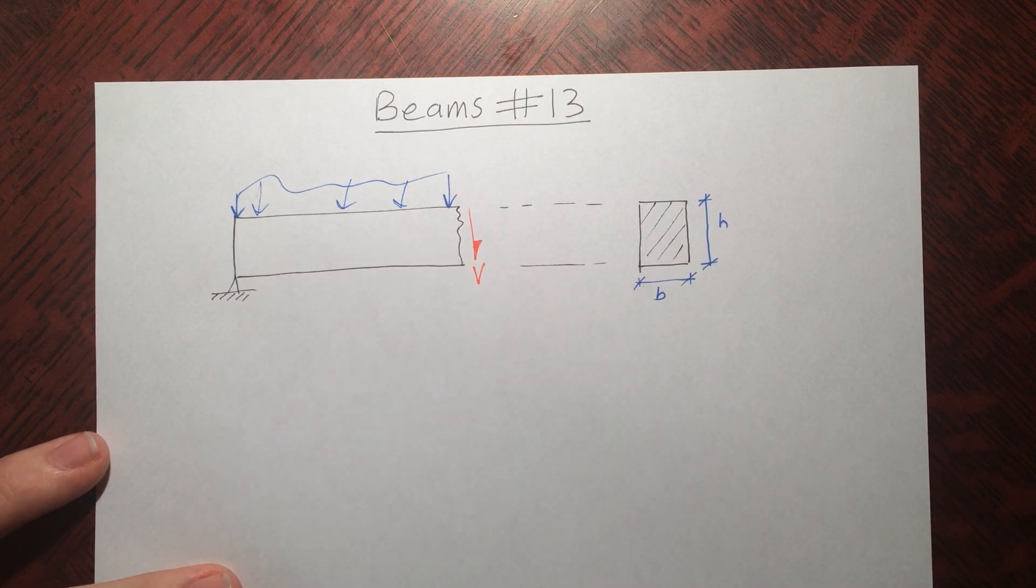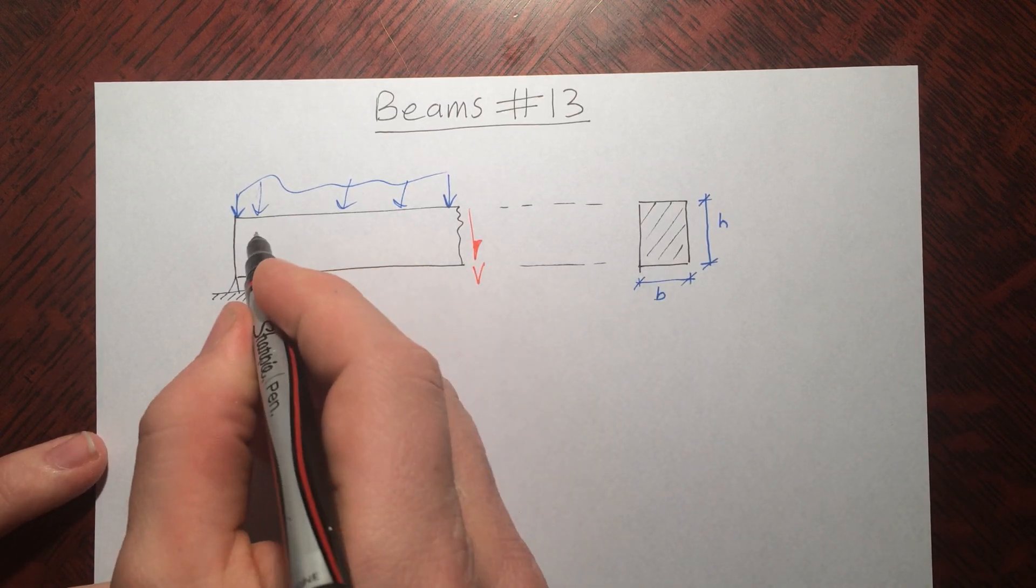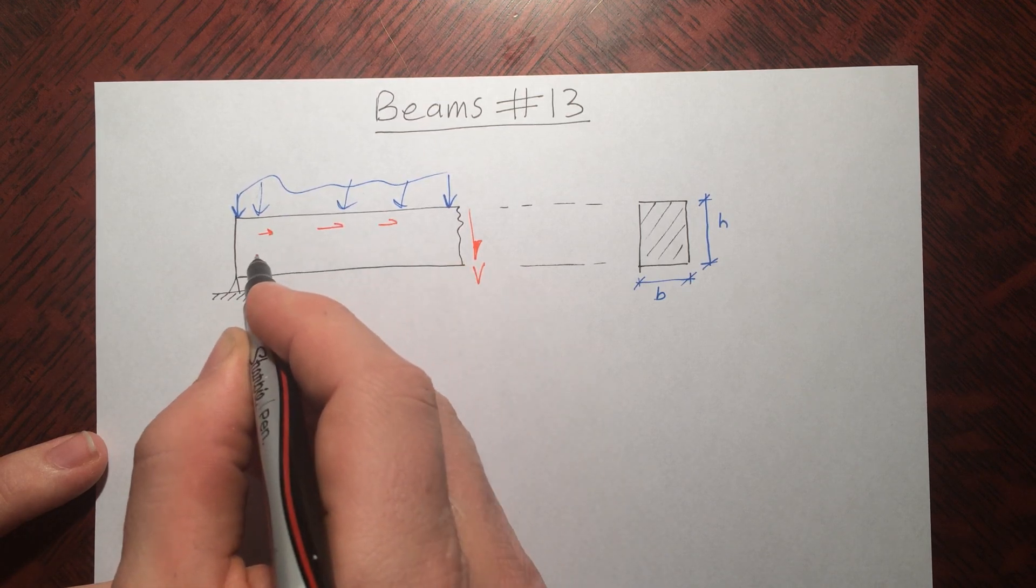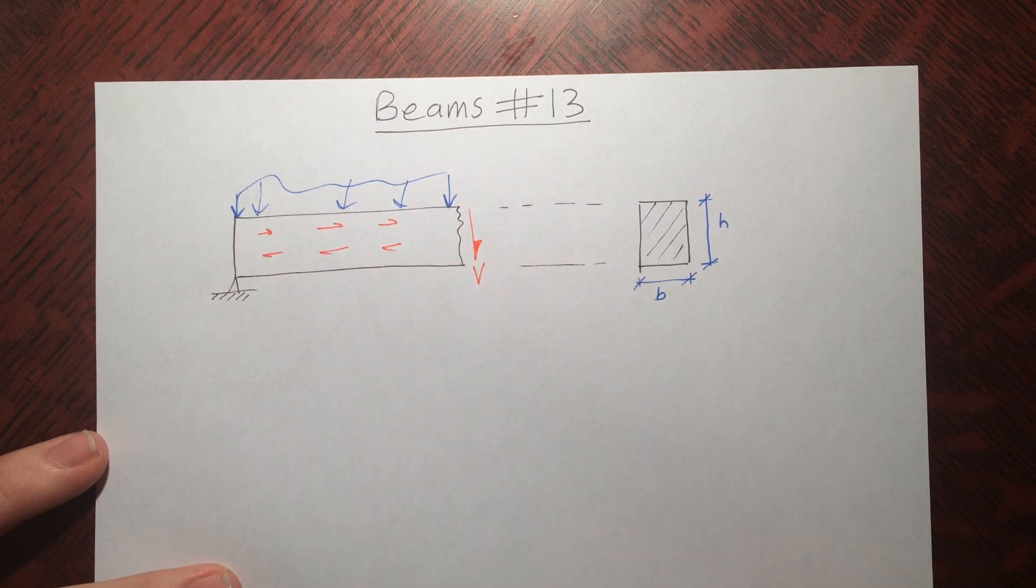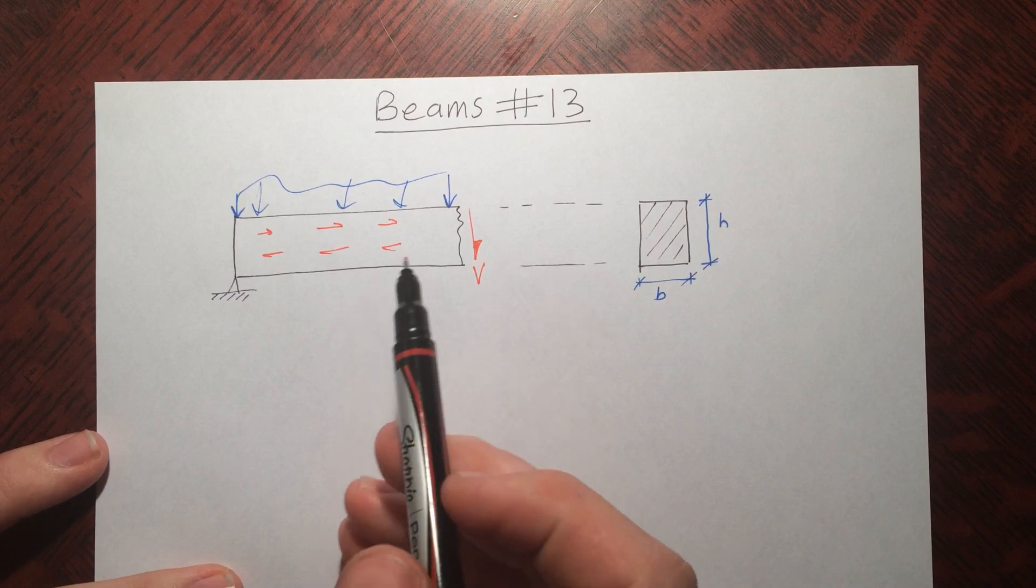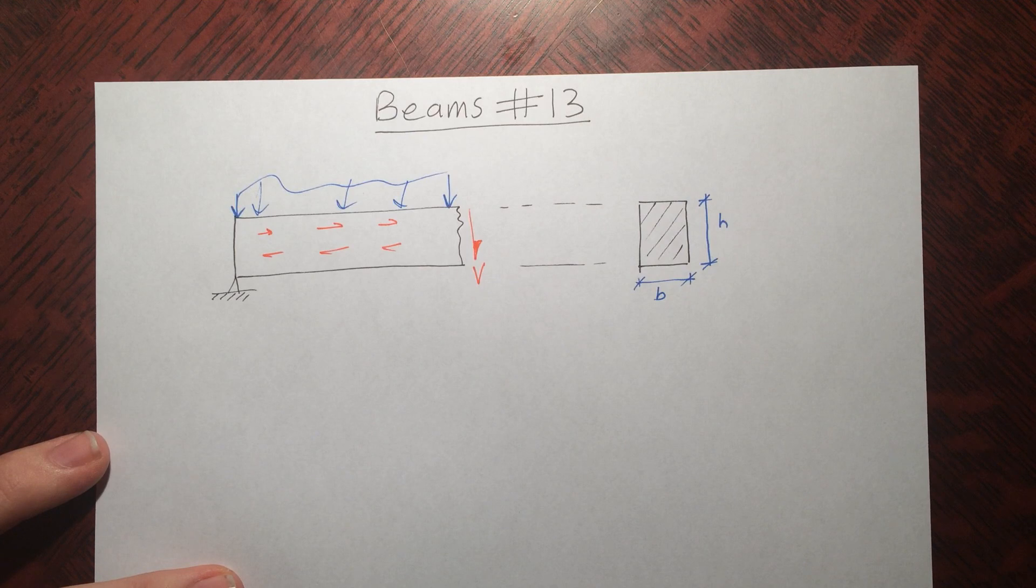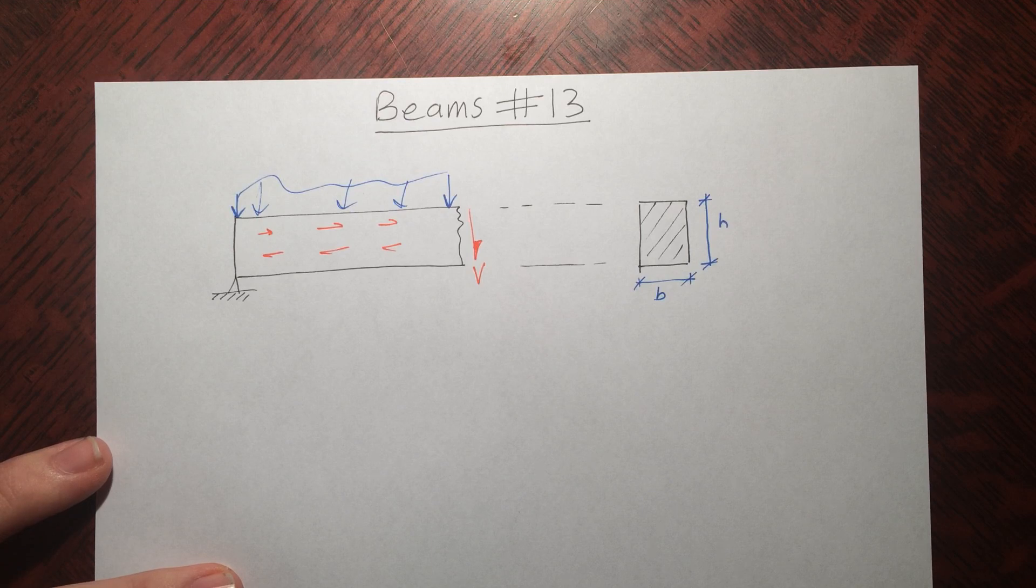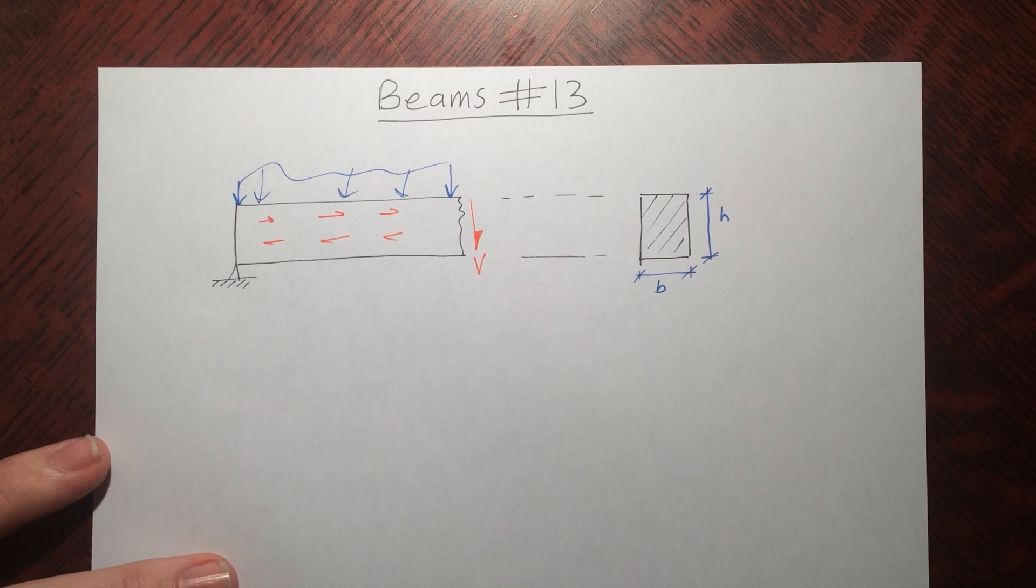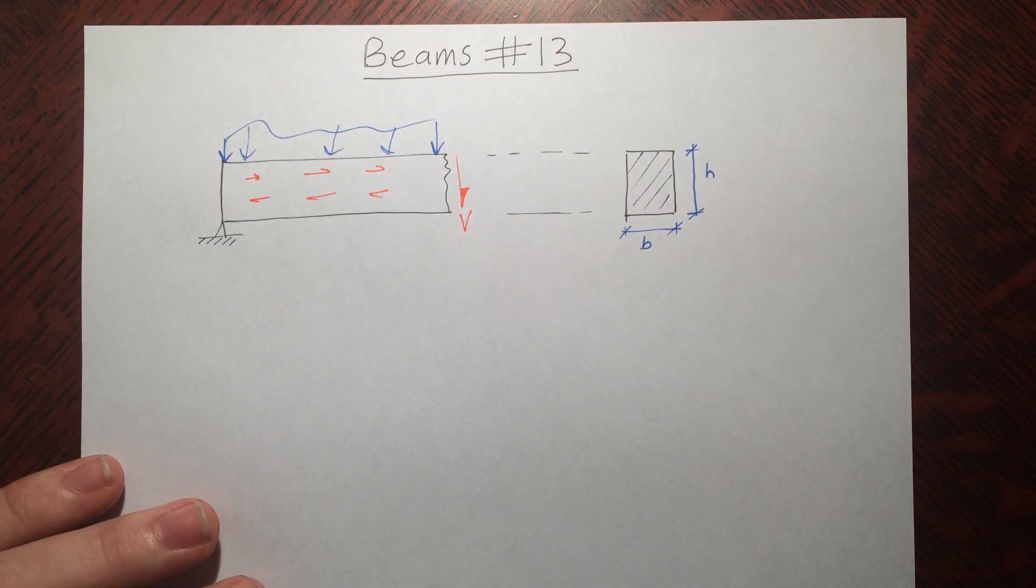So here I have a beam and we can imagine some sort of loading on here, sort of crazy loading. And in response to that, we have some sort of shear force. Now I said before that the shear forces we're talking about are going to be the ones that are developed parallel to the axes of this beam. But if we remember, for equilibrium, every single part of that piece that's in equilibrium needs to be in equilibrium.